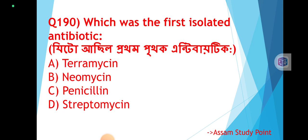Question 190: Which was the first isolated antibiotic? Patham isolated pritak kore antibiotic kunthu? — Which antibiotic was first isolated? The correct answer is Option C: Penicillin.